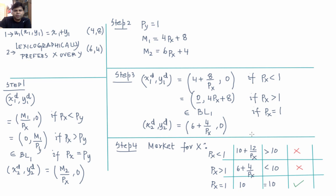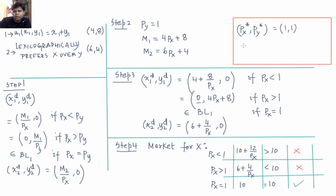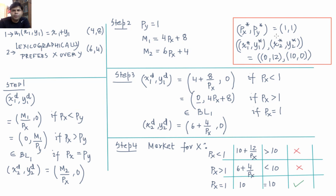Let us write the competitive equilibrium prices and allocation as the final solution. The equilibrium prices are px* = py* = 1. The competitive equilibrium allocation is: individual 2 consumes x2* = 10 units of x and y2* = 0 units of y. Individual 1 consumes the residual: x1* = 0 units of x and y1* = 12 units of y.